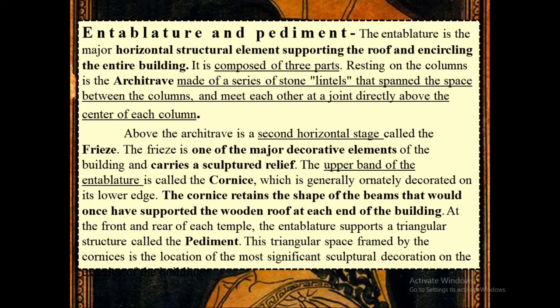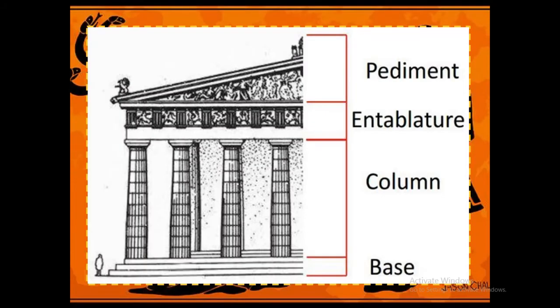The entablature is the major horizontal structural element supporting the roof and encircling the entire building. It is composed of three parts. Resting on the columns is the architrave, made of a series of stone lintels that span the space between the columns and meet each other at a joint directly above the center of each column. Above the architrave is the second horizontal stage called the frieze, which is one of the major decorative elements and carries a sculptured relief. The upper band is called the cornice, which is generally ornately decorated on its lower edge. At the front and rear of each temple, the entablature supports a triangular structure called the pediment.